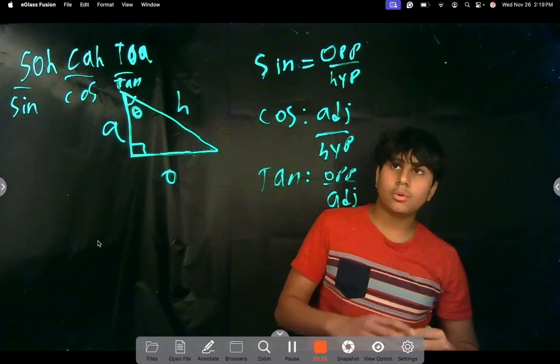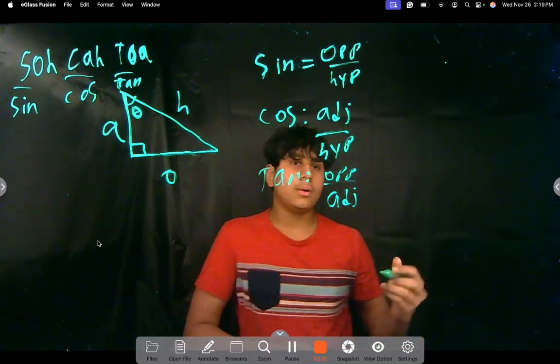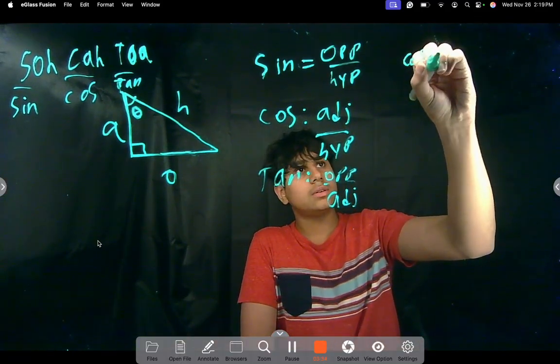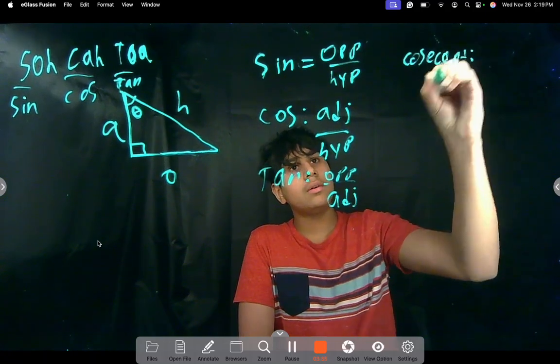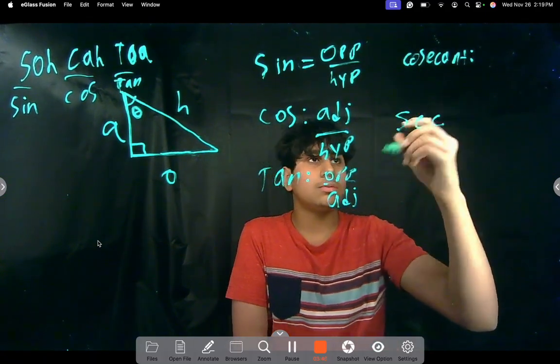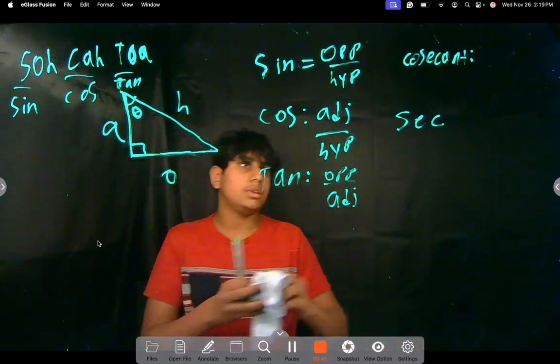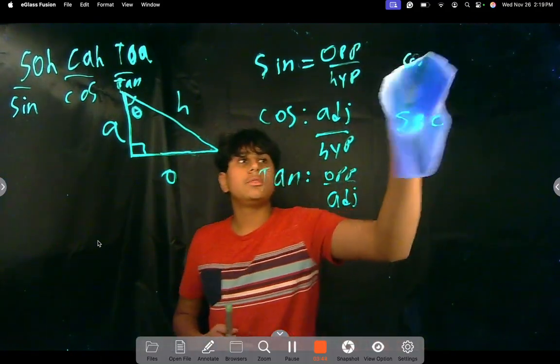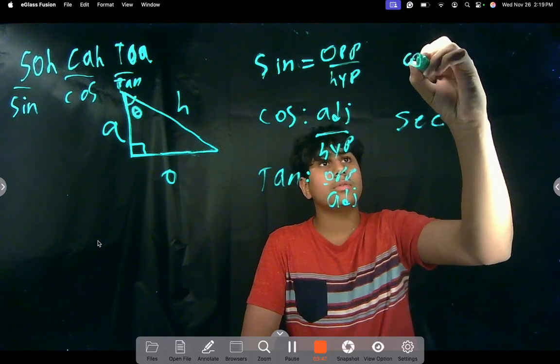Now, we have a few more. Three more. Which are cosecant, secant, and cotangent. I'll just write the abbreviations of these. Because you usually won't see them as the long forms.